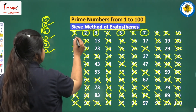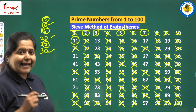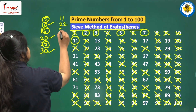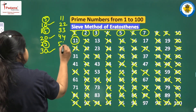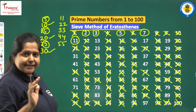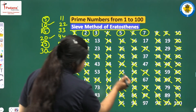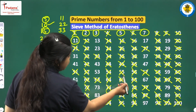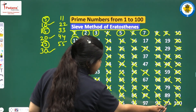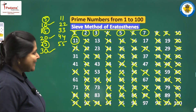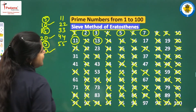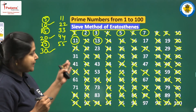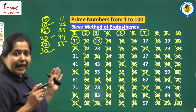We move on to the next prime number which is 11. We will cancel the multiples of 11: 11, 22, 33, 44, 55 — both digits are same — and you will see all these numbers 22, 33, 44, 55, 66, 77, 88, and 99 have already been cancelled. Then the next number is 13. We have to cancel the multiples of 13, and while cancelling you will find that we have already cancelled the multiples of 13. Now whatever numbers have been left, they are the prime numbers.